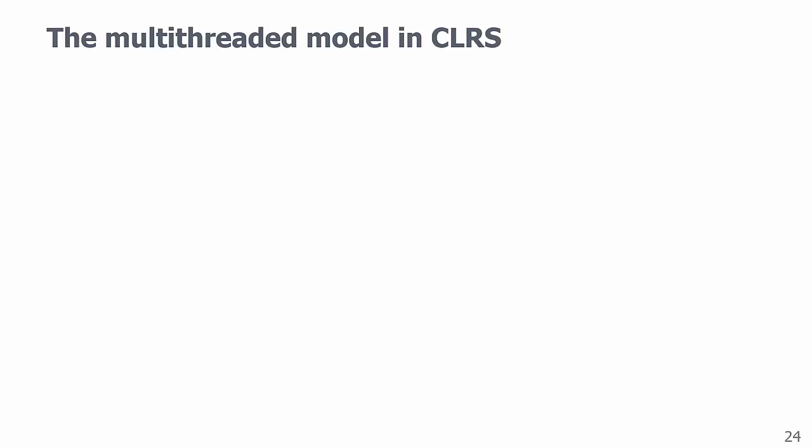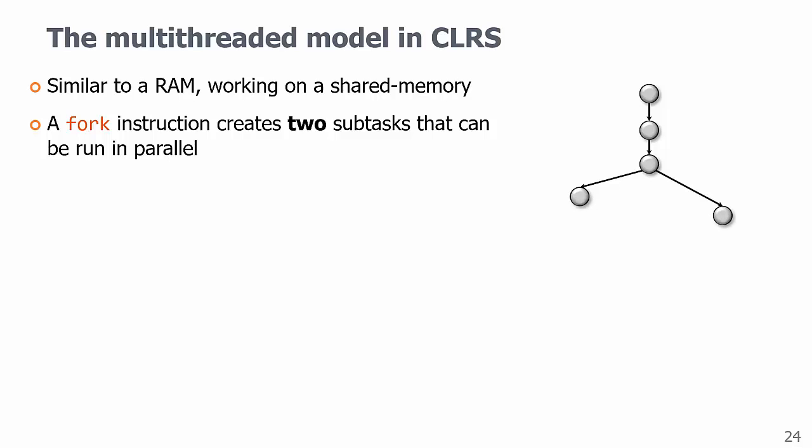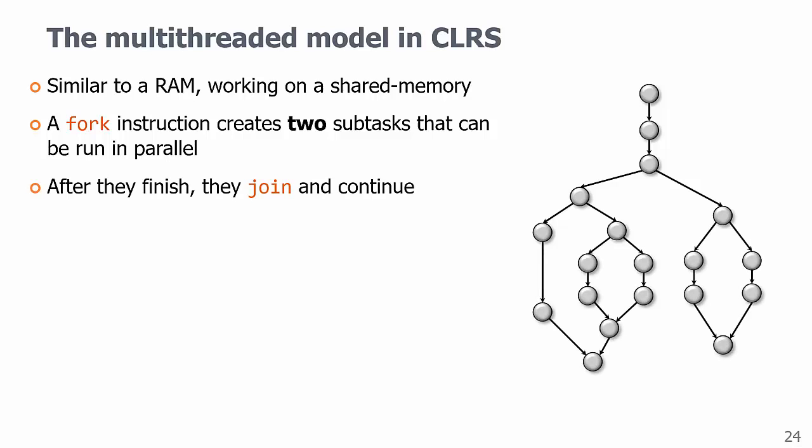A multi-threaded model has multiple threads, as the name suggests. Each is similar to a RAM that can execute instructions or access a shared memory sequentially. In addition, a fork instruction creates two sub-tasks that can be run in parallel, and of course you can do it recursively. And after both sub-tasks finish, they join back and continue executing.